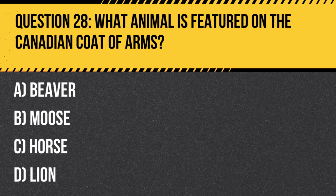Answer: D. Lion. The Canadian coat of arms features both a lion and a unicorn, symbolizing the country's ties to the United Kingdom.